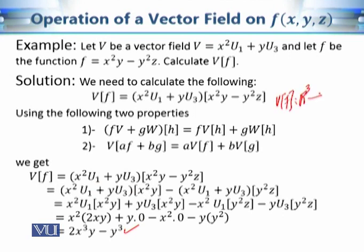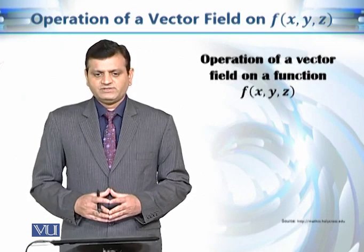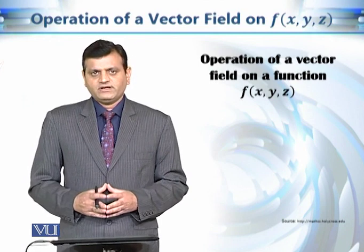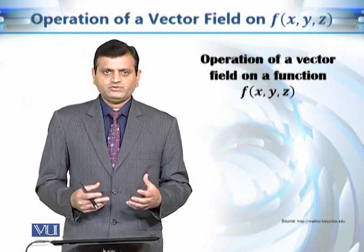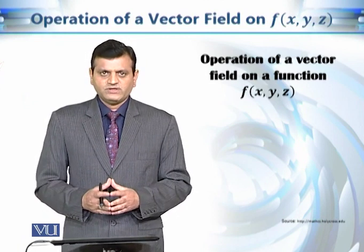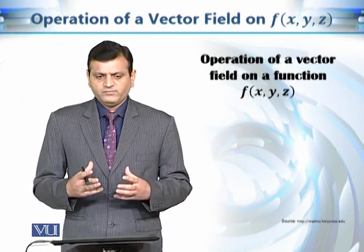So V(f) is a function from R³ to R — when we substitute values of x, y, z we get a real number — and this is the directional derivative. If we choose any point of R³ and apply this function, the vector field provides the direction and the point is given, so we can calculate the directional derivative. In this module we have seen that to calculate the directional derivative we need a direction at each and every point, hence we use the concept of vector field and combine these two things together to find directional derivatives at every point.